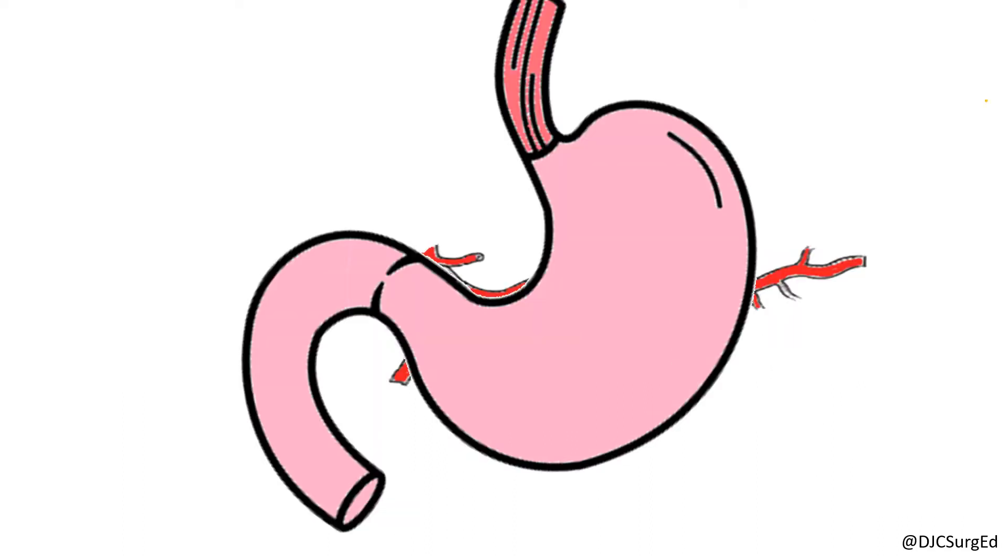At the GE junction, the left vagus is anterior and the right vagus is posterior. The left vagus gives off a hepatic branch and continues along the lesser curvature as the anterior nerve of Latarjet.